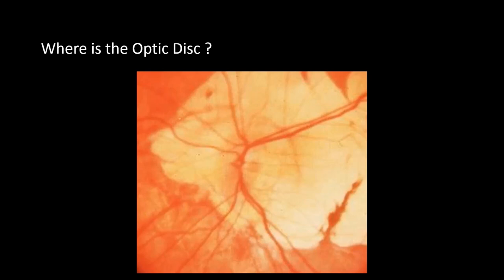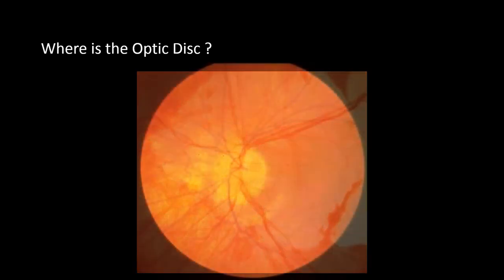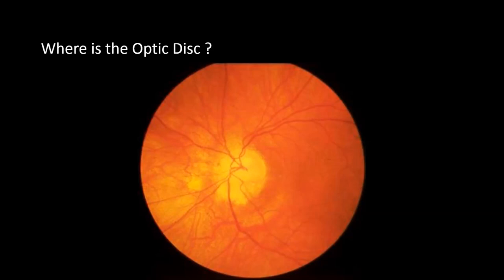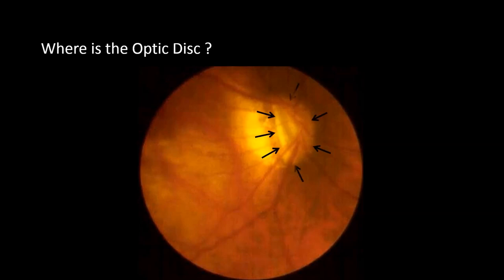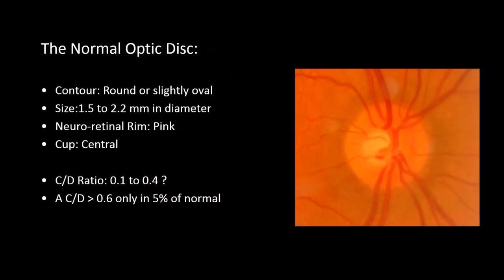Revisiting the optic disc photos shared earlier: in one photo, it's a small oval optic disc with a flat surface and no cupping in a hyperopic eye. Tracing the disc margin in another photo reveals an oval tilted optic disc, again with no cupping, in high myopia. Finally, here is a small oval vertical disc with no cupping in a posterior coloboma in a hyperopic eye.